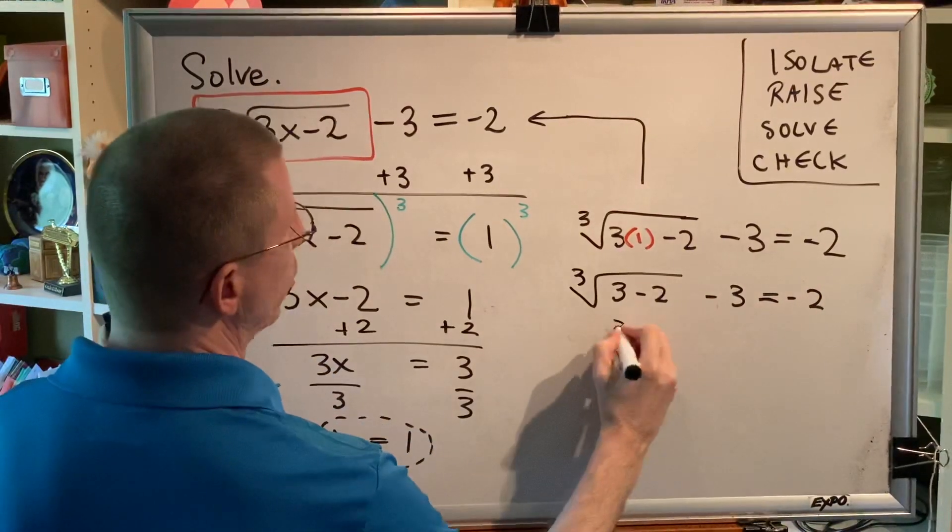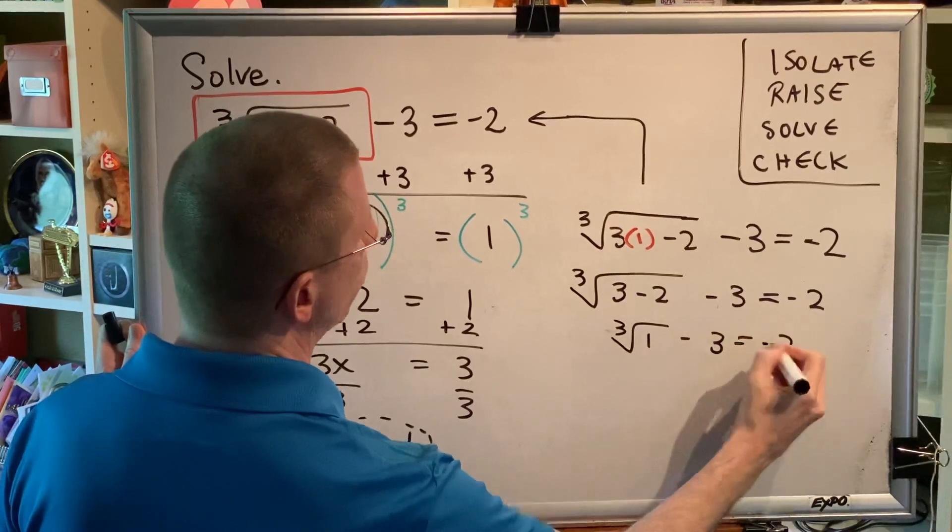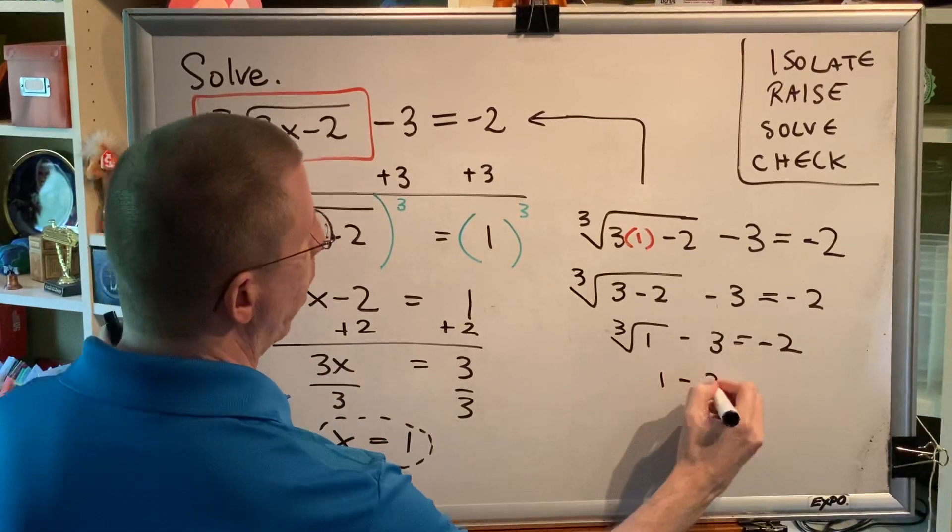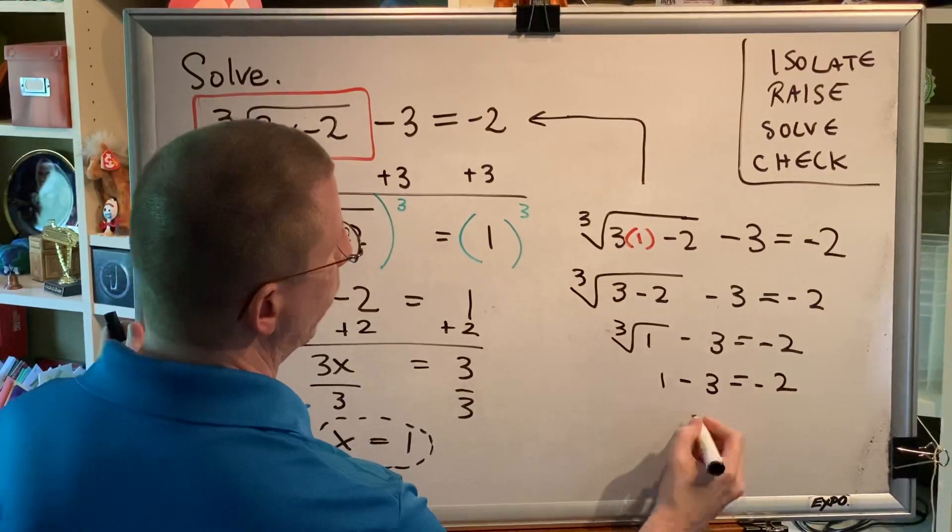Now, do the subtraction. So, we have the cube root of 1, minus 3, equals negative 2. The cube root of 1 is 1. So, we have 1 minus 3, equals negative 2. And 1 minus 3 equals negative 2.